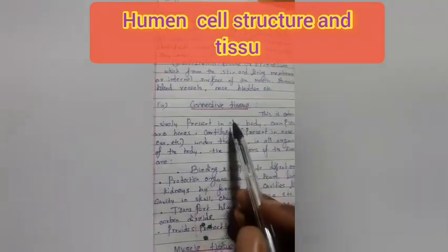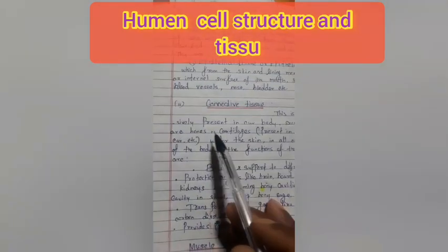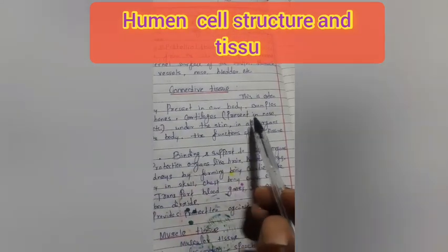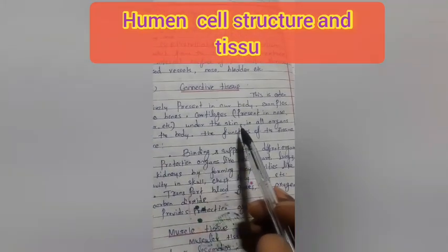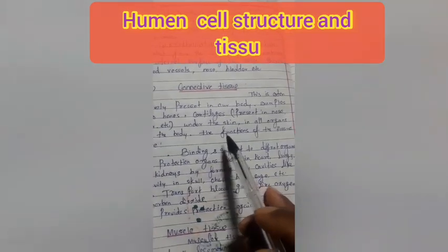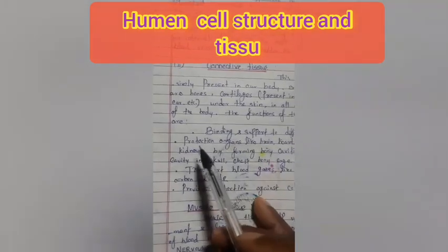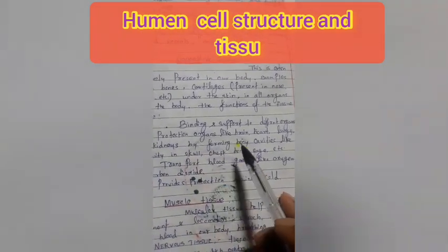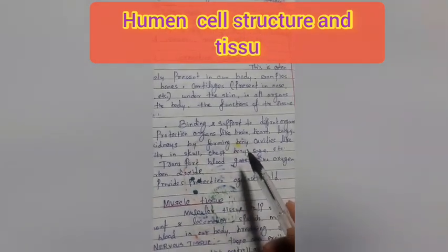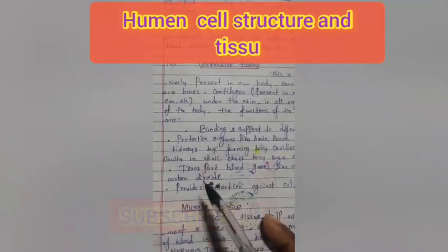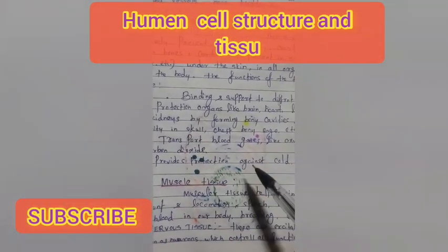Number 2: Connective tissue. This is extensively present in our body. Examples are bones, cartilage present in the nose, hair, and under the skin, and in all organs of the body. The functions of this tissue are binding and support to different organs, protection of organs like the brain, heart, and lungs by forming bony cavities like the skull cavity, chest, and rib cage. It also transports blood gases like oxygen and carbon dioxide, and provides protection against cold.